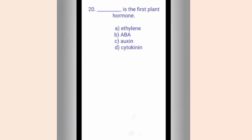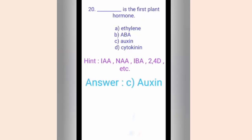Question number twenty. Dash is the first plant hormone. The options are A. Ethylene, B. ABA, C. Auxin, D. Cytokinin. The hint shows IAA, NAA, IBA, and 2,4-D as examples. The correct answer is option C, Auxin, as the hint shows all examples of auxin.